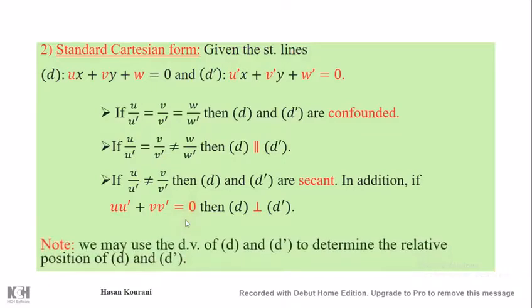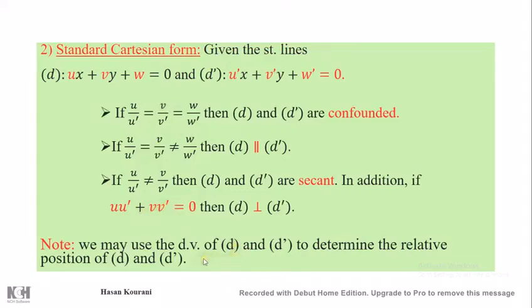Note that we may also use the direction vectors of D and D prime to study the relative position. By examining the relation between their direction vectors, we can determine the relative position as well. For example, if the direction vector of D and direction vector of D prime are orthogonal — meaning their dot product or scalar product is zero — this indicates that D and D prime are perpendicular. However, it is preferable to use the ratio conditions to directly deduce the relative position.